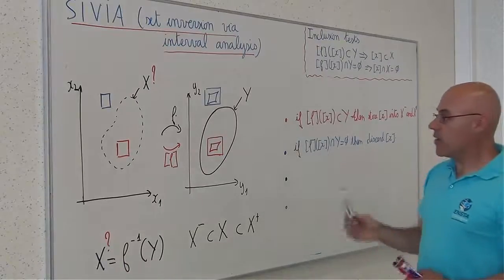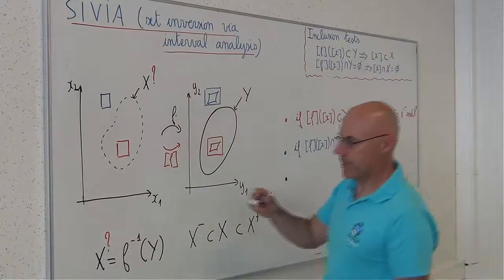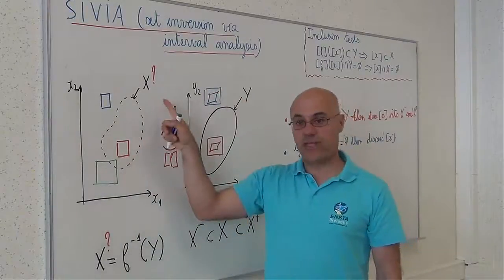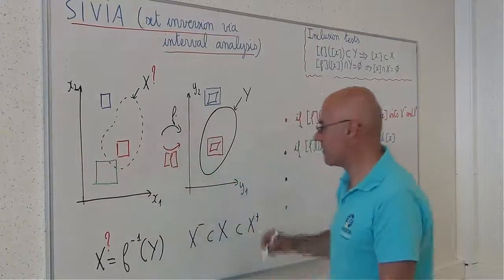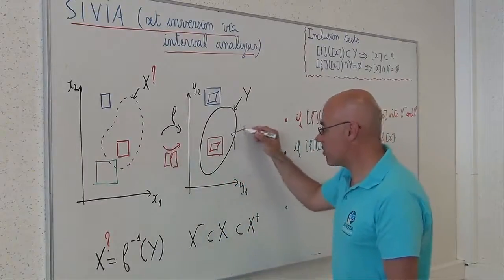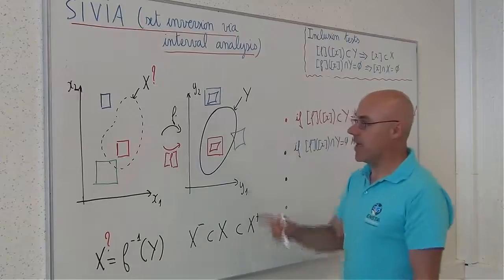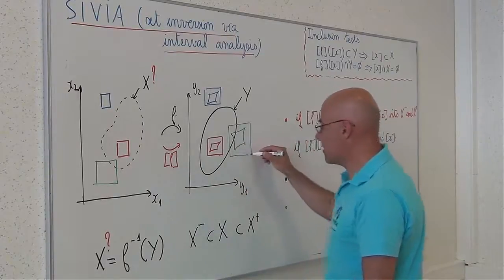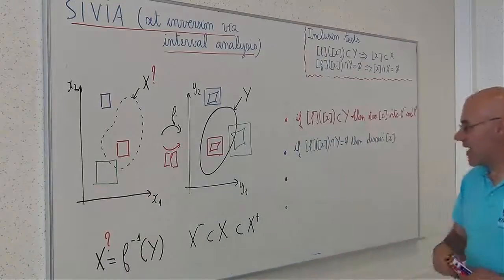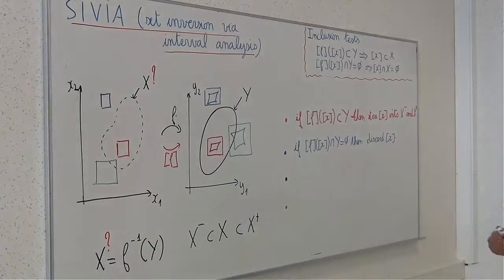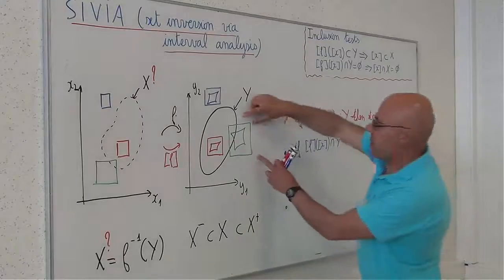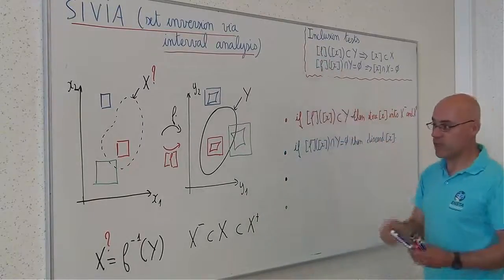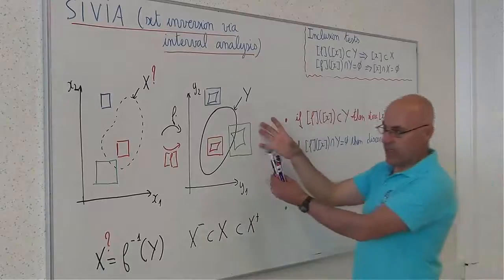I will consider another situation. I consider a box like this, which is neither inside x, neither outside. Its image could be like this. And by the inclusion function, I will obtain something like this. So this box does not satisfy this condition, nor this condition. In such a case, I will bisect it into two sub-boxes.